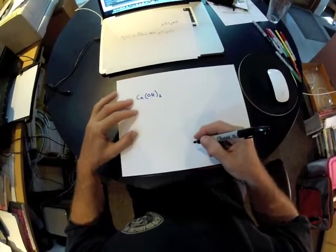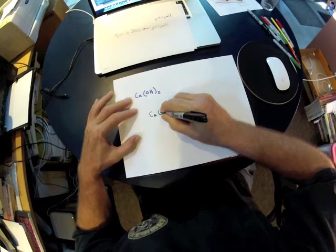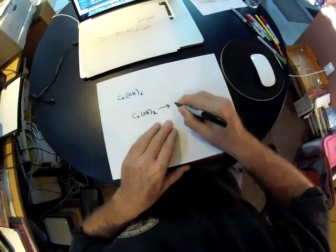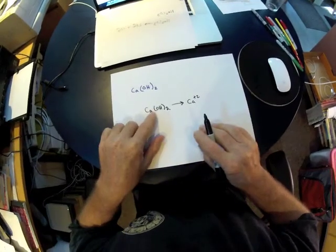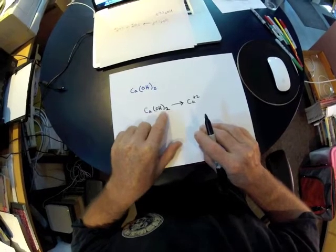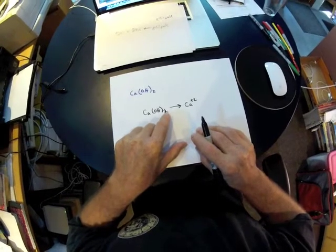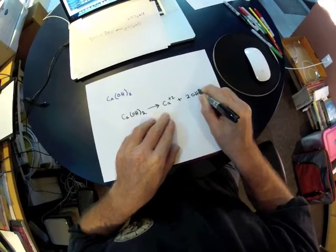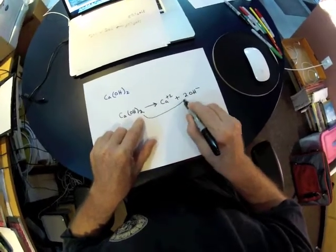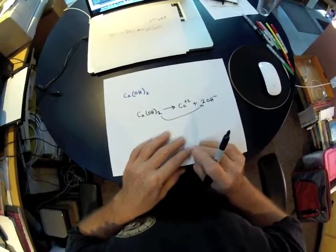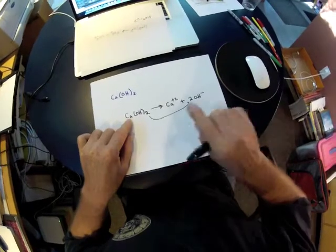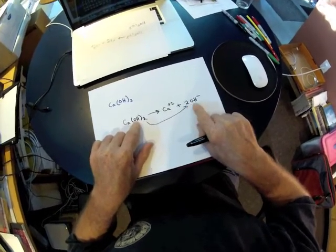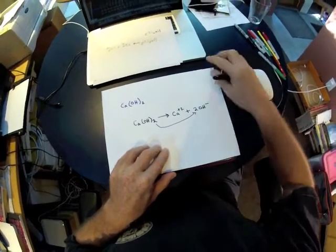In the next example, we ionize calcium hydroxide. I rewrite the formula, use an arrow, and separate it into ions. Calcium is from group 2, so it's Ca²⁺; the subscript next to it is 1, and by convention we don't show 1s. For hydroxide, it's inside parentheses with a subscript 2 outside, meaning there are two hydroxides — the subscript becomes the coefficient multiplying the polyatomic anion. Checking balance: one calcium on the left, one on the right; two hydroxides on the left, two indicated by the coefficient on the right. This is a properly written balanced ionization equation.